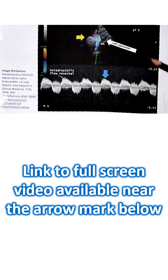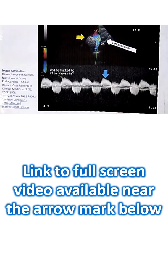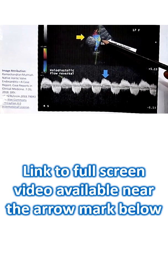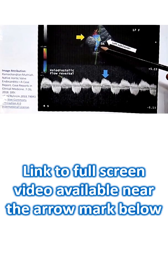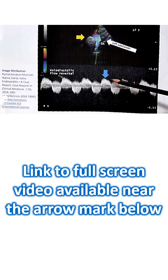In severe aortic regurgitation, there will be significant flow reversal in descending aorta. Usually you expect forward flow in descending aorta. This is flow reversal and the cursor is placed just beyond the left subclavian artery. This is the suprasternal view and this is the tracing which you obtained.